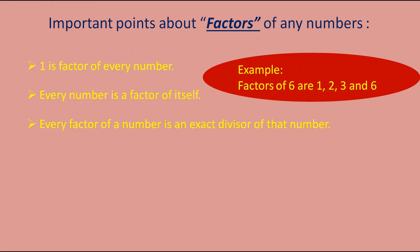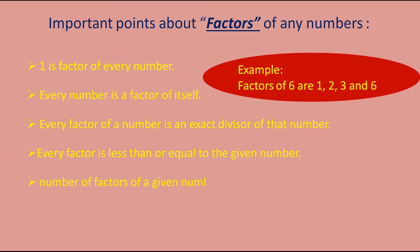Next point: every factor is less than or equal to the given number. The factors of six are 1, 2, 3, and 6. Here 1, 2, and 3 are less than six, and six is equal to six. So every factor is less than or equal to the given number. The next point: the number of factors of a given number is finite — meaning we can count them. The factors of six are four in number: 1, 2, 3, and 6. So we can count them; therefore the number of factors of a given number is finite.